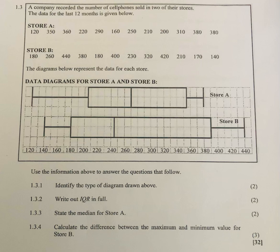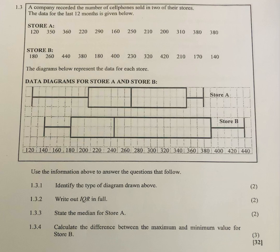Let's look at this question. It says a company recorded the number of cell phones sold in two of their stores. The data for the last 12 months are given below. Store A: 120, 350, 360, 220, 290, 160, 250, 210, 200, 310, 380, 380. Store B: 180, 264, 440, 380, 180, 400, 230, 320, 420, 210, 170, and 140.